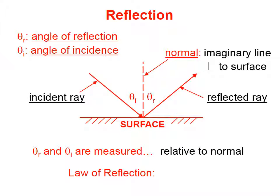Theta sub r, the angle of reflection, and theta sub i, the angle of incidence, are always measured relative to the normal, never measured relative to the surface.